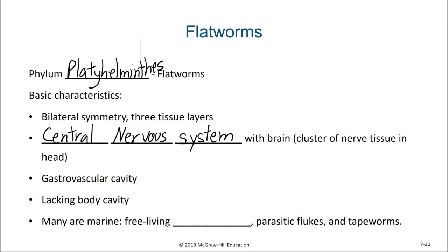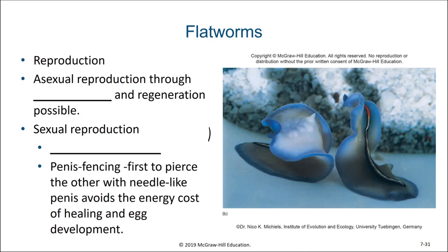When we look at the basic lifestyle of these flatworms, several are free-living flatworms, which we call turbellarians. Some are going to be parasitic flukes and some will be tapeworms. Asexual reproduction can happen through fragmentation and regeneration. Sexual reproduction is also possible. These flatworms are hermaphroditic, having both male and female reproductive organs.